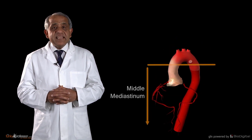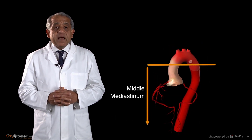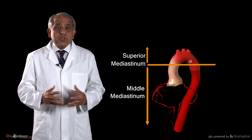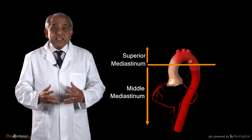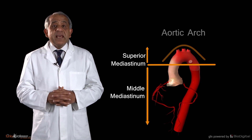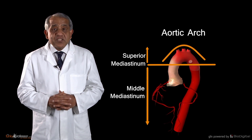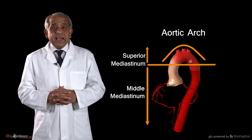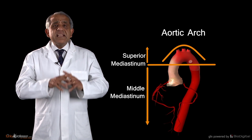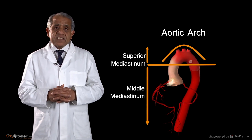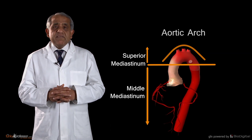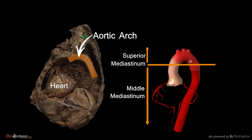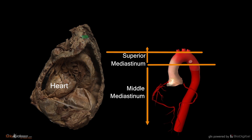The ascending aorta, on perforating the fibrous pericardium, enters the superior mediastinum and changes its name to the aortic arch, or the arch of the aorta. The arch of the aorta lies entirely within the superior mediastinum. In fact, the summit — the highest point of the aortic arch — is level with the midpoint of the manubrium sterni.